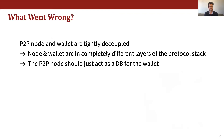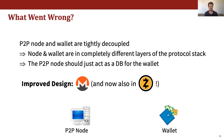Taking a step back, what went wrong here? Basically, the problem is that in the Zcash client, the peer-to-peer node and user wallet are tightly coupled, even though they correspond to very different layers of the protocol stack. Ideally, the peer-to-peer node should just manage the currency's consensus layer and collect transactions and expose these to the wallet. This is exactly the design that Monero uses and that the newer Zcash client has now also switched to.